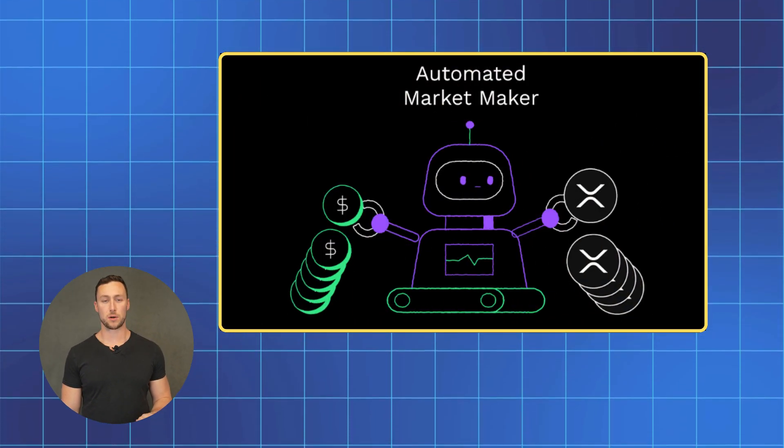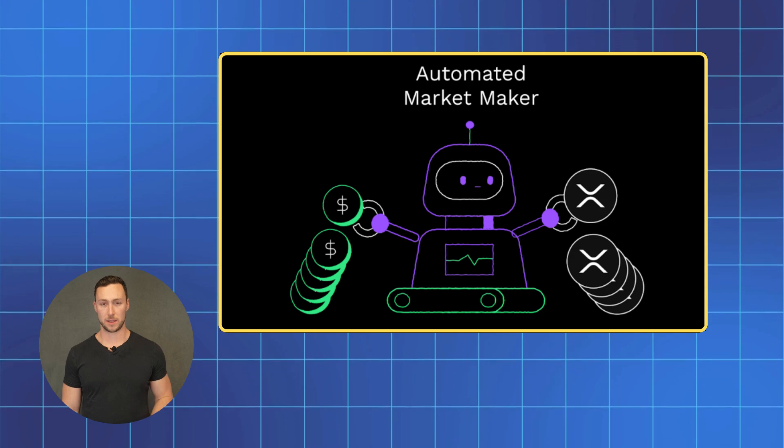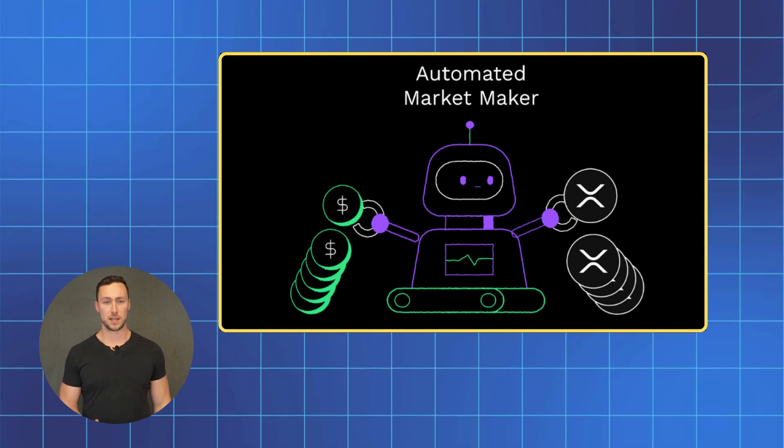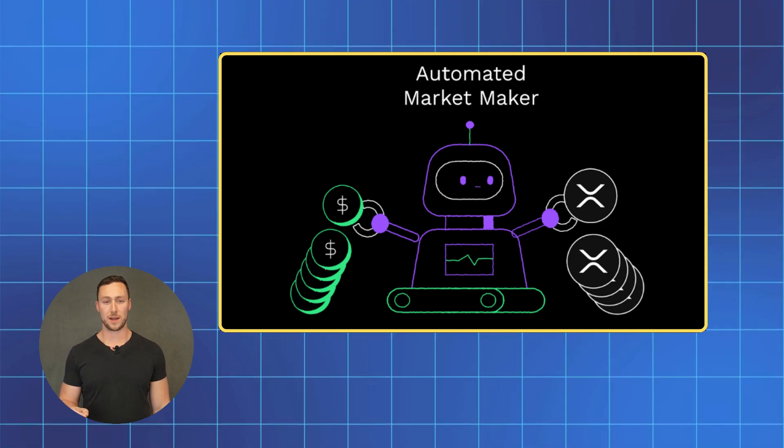But decentralized exchanges are different from centralized exchanges. They use something called an AMM or automated market maker. Instead of matching buyers and sellers, think of an AMM like a vending machine that automatically sets prices.